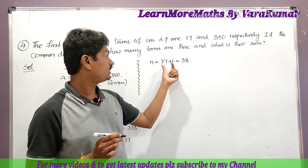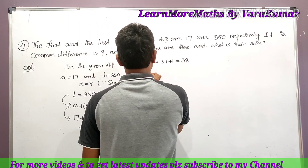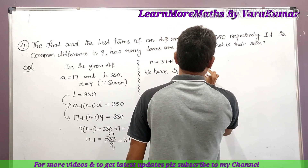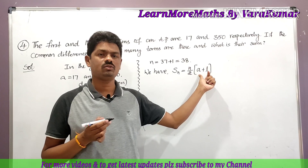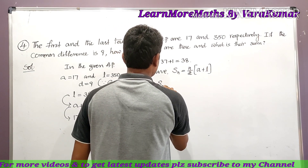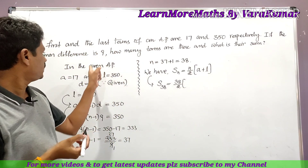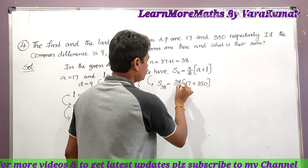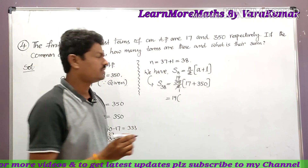So there are 38 terms in the given AP. Now to find their sum, we use the formula Sn = n/2 × (a + l). Here n = 38, so S38 = 38/2 × (17 + 350) = 19 × 367.